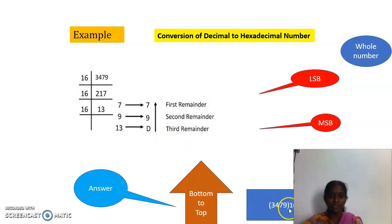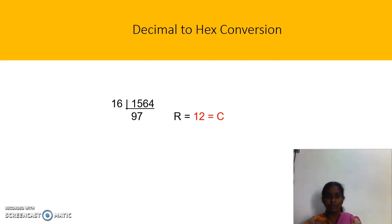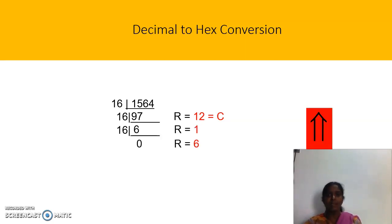The final answer: 3479 in base 10 converts to D97 in base 16. The subscript 16 denotes it is hexadecimal, so by looking at the answer we can confirm the conversion from decimal to hexadecimal. For the next example, I will leave it as a homework problem. You take down this problem in your notes, work it out, and we will check the answer. The answer is 61C.